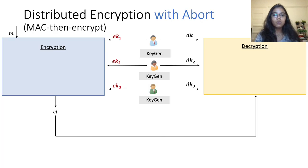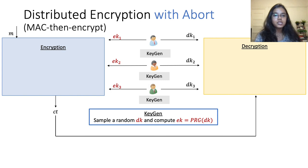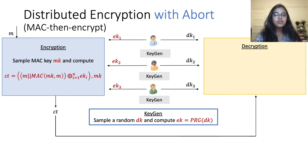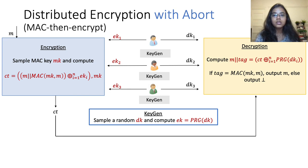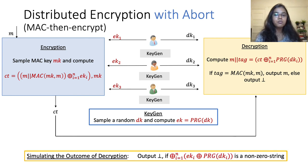For constructing distributed encryption with these properties, we first design a scheme achieving security with abort and then show how to use cut-and-choose to amplify its security to identifiable abort. Our distributed encryption with abort uses the standard MAC-then-encrypt idea. The parties sample random decryption keys, and encryption keys are PRG evaluations of these decryption keys. The encryption algorithm samples a random MAC key and implements MAC-then-encrypt. The decryption algorithm evaluates the PRG on all decryption keys to obtain the corresponding encryption keys and uses them to decrypt the message and tag, then checks if the tag is a valid MAC. For predicting the outcome, we compute an XOR of all the encryption keys and the PRG evaluations of all the decryption keys — if the result is non-zero, the output will be abort; otherwise it will be a valid message.